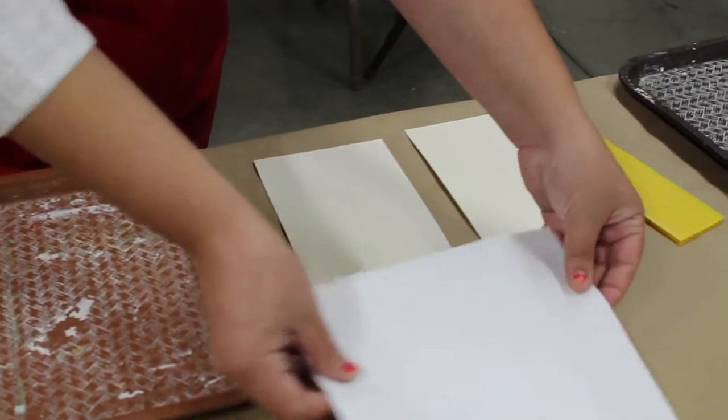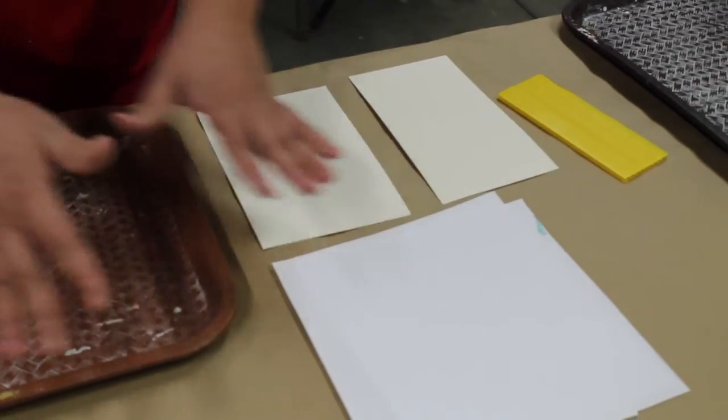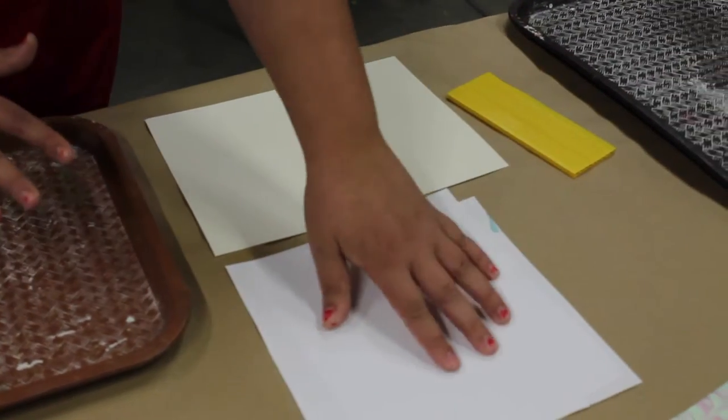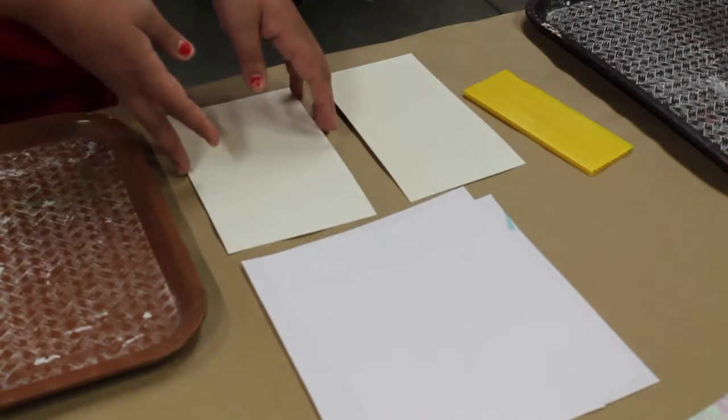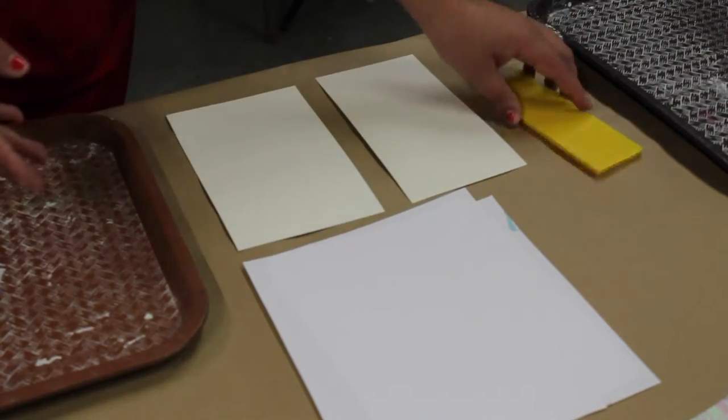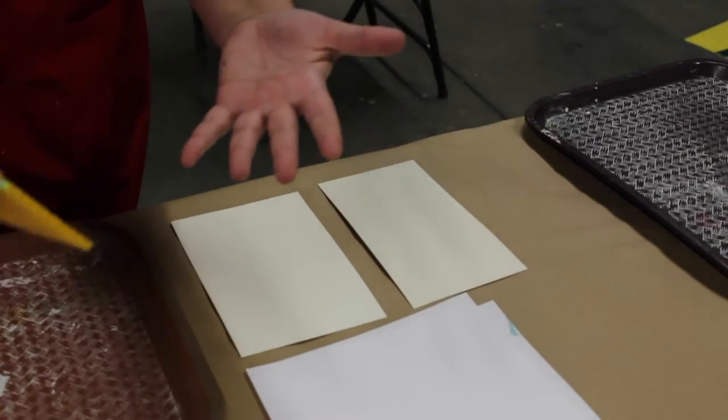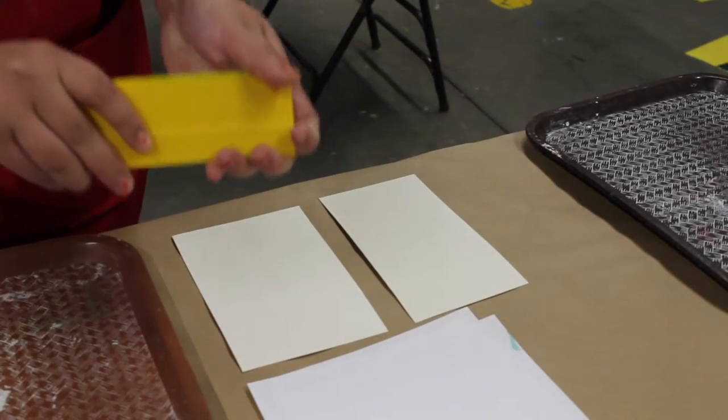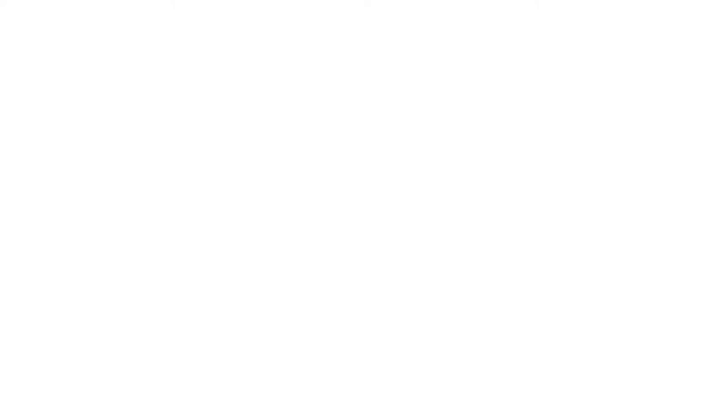Paper to do our transfers on. Doesn't matter what kind of paper. You can use computer paper or thicker watercolor paper. And then also some kind of scraper to scrape the excess off. You could use thick cardboard to do that as well.